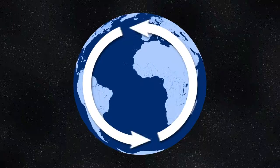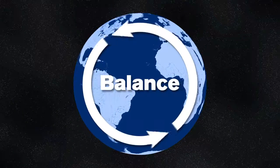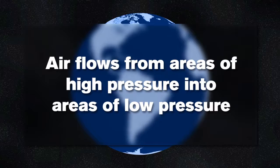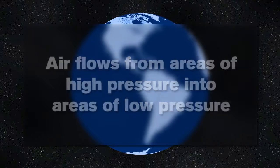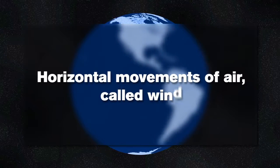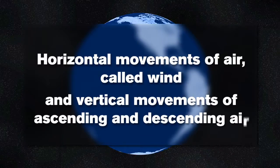The Earth's circulation patterns always try to maintain a balance. This means that air flows from areas of high pressure into areas of low pressure. This causes both horizontal movements of air, called wind, and vertical movements of ascending and descending air.